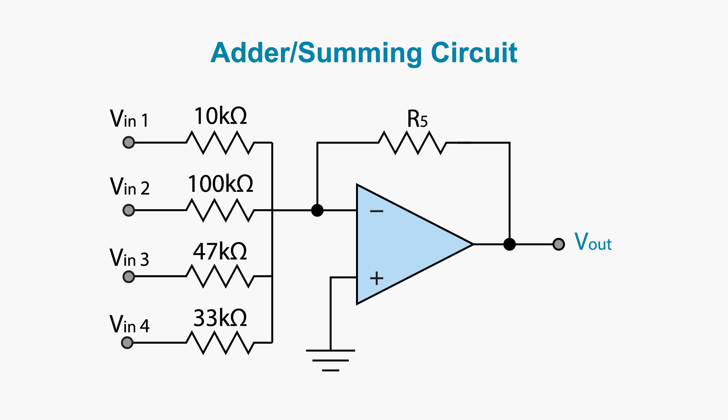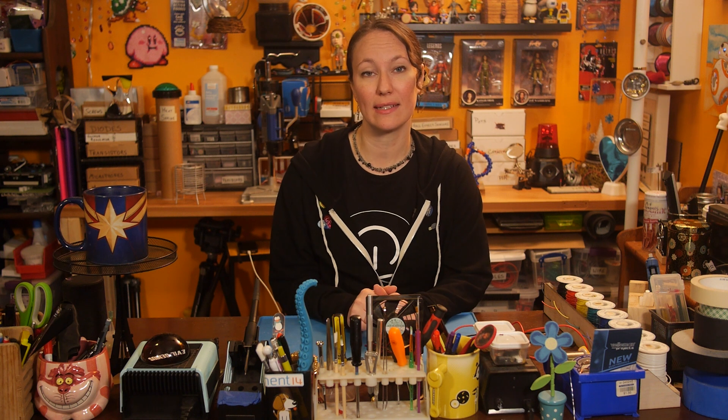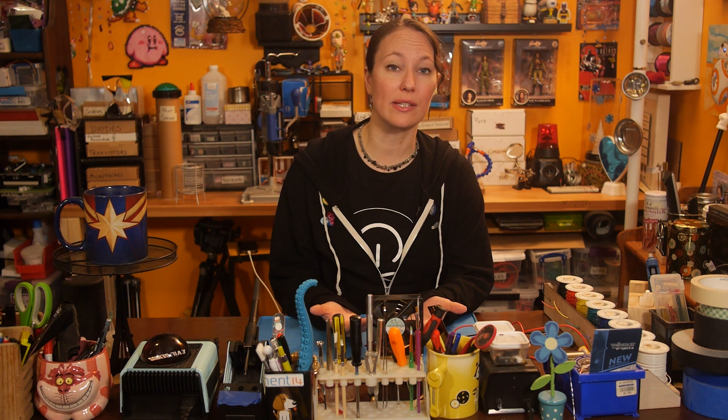In a summing circuit with all the values the same, the inputs are balanced. But for a DAC, we actually want the values to be unbalanced. The op amp circuit we need for digital to analog signal conversion is called a binary weighted input DAC. To understand how this circuit works, we should start by reviewing some bits about binary.